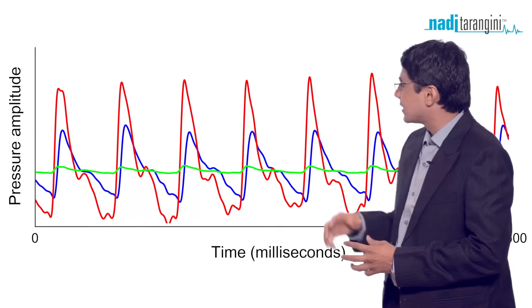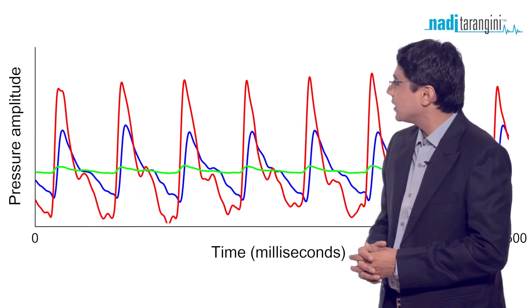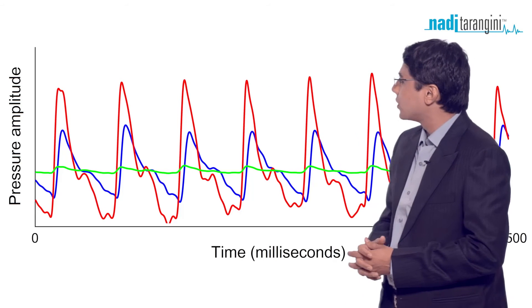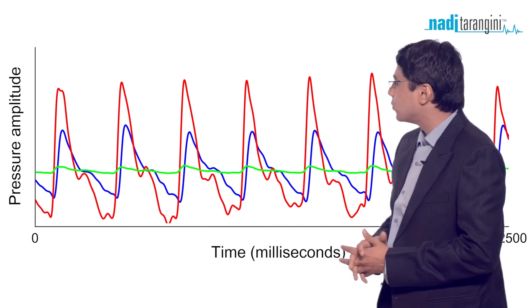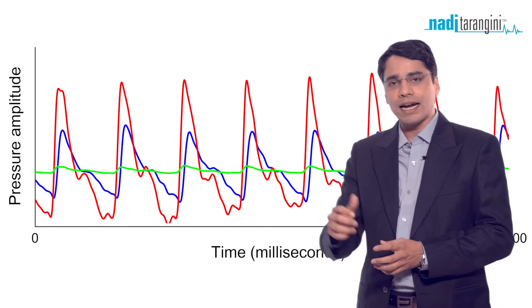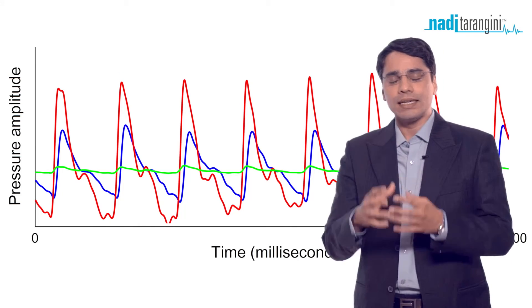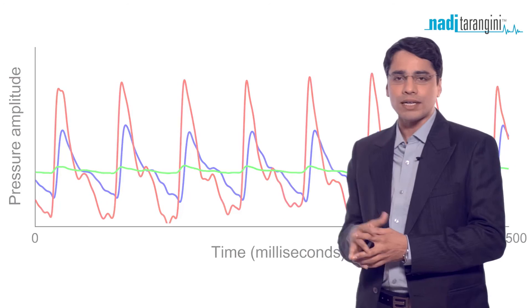In the second example, you see the red line is stronger compared to the green line and the blue line. We can say that at this moment, the Pitta dosha had more strength compared to the other Doshas.